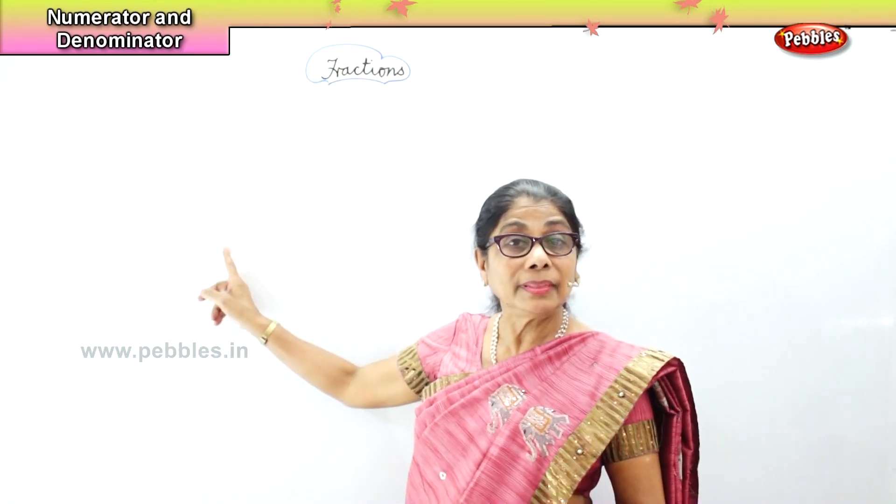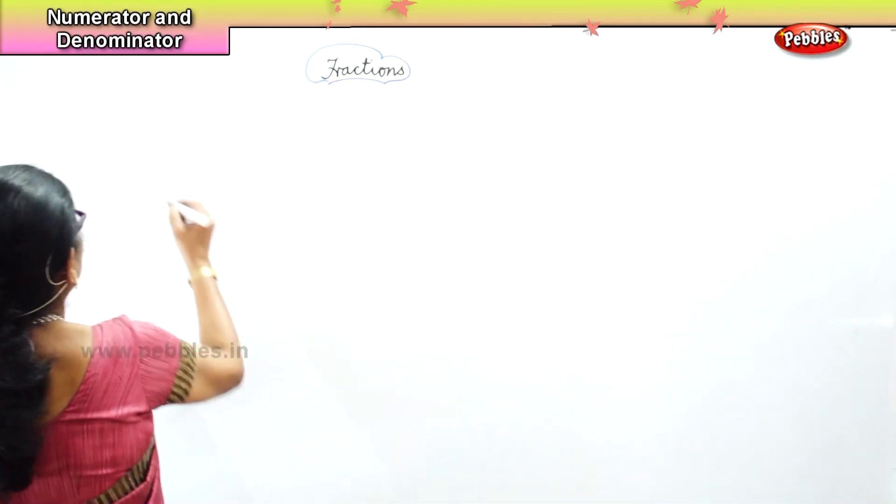In a fraction, we have a number, then a line, and a number. When we write one part out of two parts, that is half. The top number is called the numerator, and the line and the bottom number is called the denominator. So we are going to look at numerator and denominator.